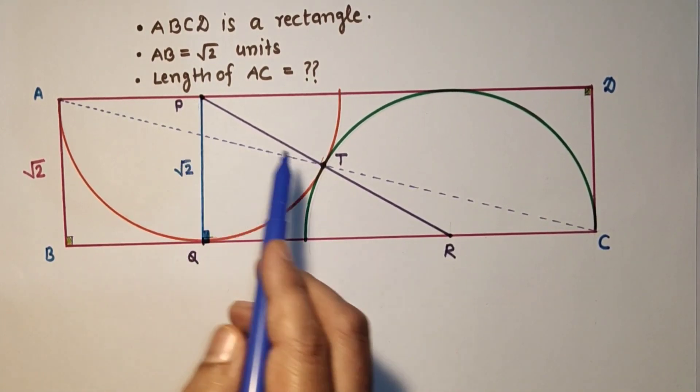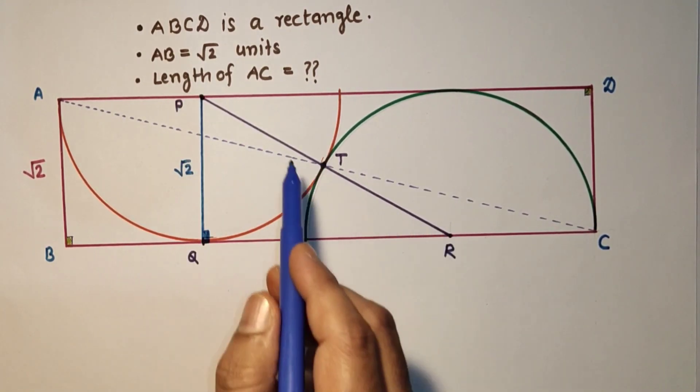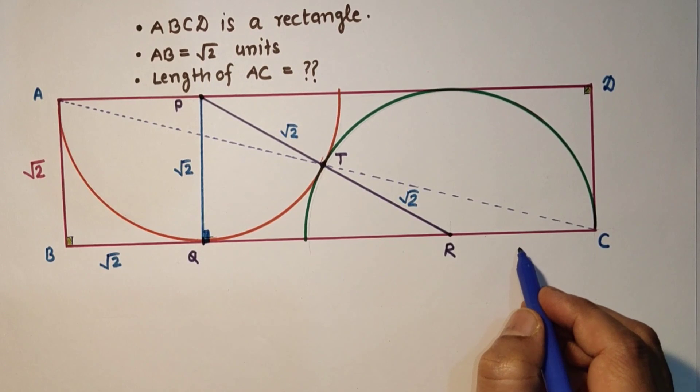So this will be root 2. From center to the circumference this is again root 2 and center to center. So this will be root 2 and root 2, and BQ is root 2 and RC is root 2.